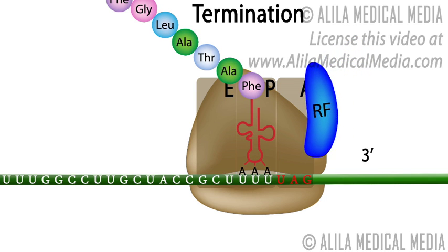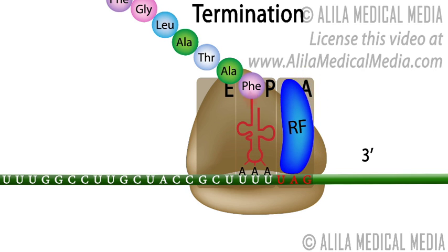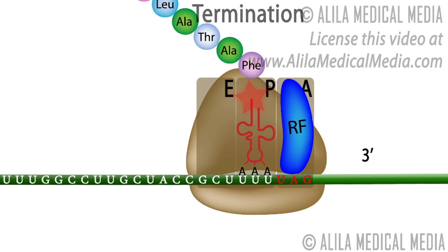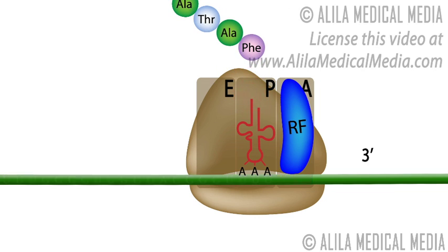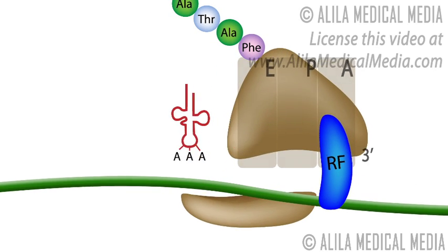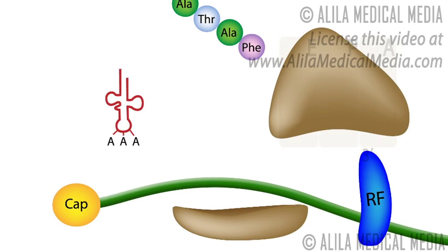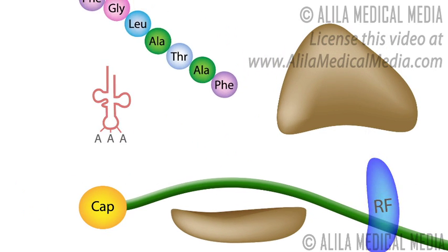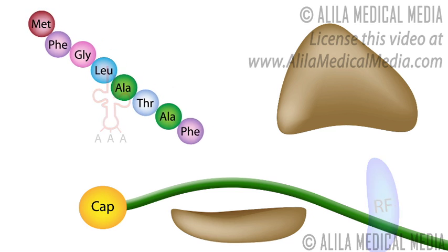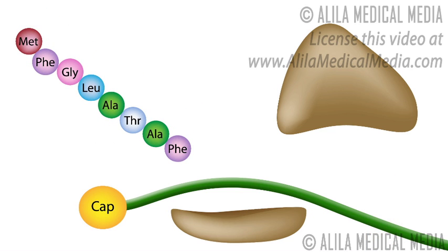Binding of the release factor catalyzes the cleavage of the bond between the polypeptide and the tRNA. The polypeptide is released from the ribosome. The ribosome is disassociated into subunits and is ready for a new round of translation.